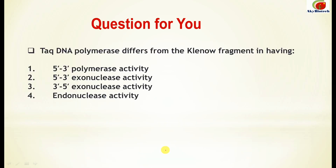Today we also have a new question for you — kindly try to solve it. The question is: Taq DNA polymerase differs from the Klenow fragment in having which of the following? The four options are: (A) 5' to 3' polymerase activity, (B) 5' to 3' exonuclease activity, (C) 3' to 5' exonuclease activity, or (D) endonuclease activity. Please pick the correct option and comment in the comment box — we will discuss it in the next video.